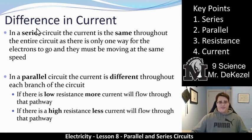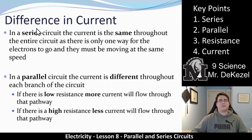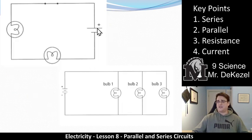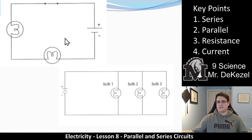Now, the difference in current. Resistance is how difficult it is to get electrons through, and current is how many charges are actually moving past a point at one time. In a series circuit, the current is the same throughout the entire circuit, because there's only one way for the electrons to go and they must be moving at the same speed. So the current is always moving at the same pace, no matter where you are on the circuit.